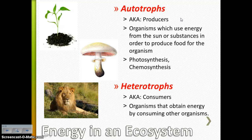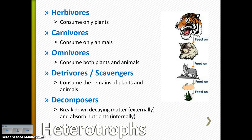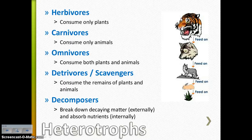Autotrophs versus heterotrophs — an autotroph is another name for a producer. These are organisms which use energy from the sun or other substances in order to produce food on their own, like photosynthesis or chemosynthesis. Basically, they make their own food and don't have to consume anything else. A heterotroph is also known as a consumer — they have to obtain energy by consuming other organisms. There are different types: herbivores eat plants, carnivores eat animals, omnivores eat both. Detritivores and scavengers eat remains or decaying matter, while decomposers break down decaying matter externally and then absorb the nutrients internally.